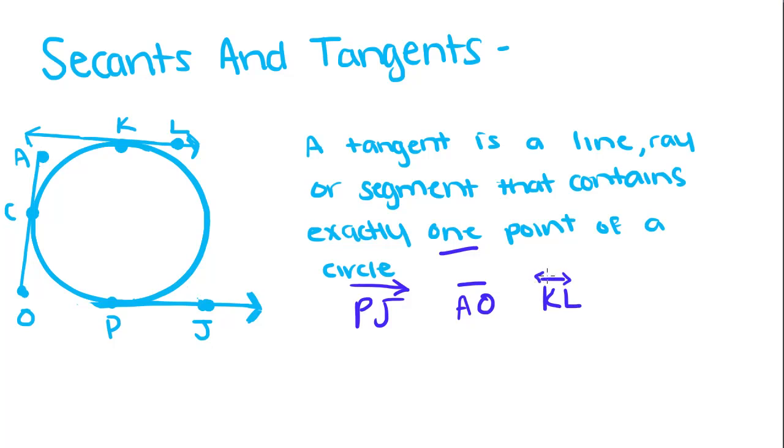So PJ intercepts this circle at point P only. AO intercepts this circle at point C only. And KL intercepts this circle at K only.